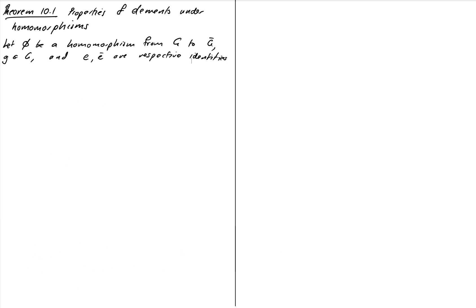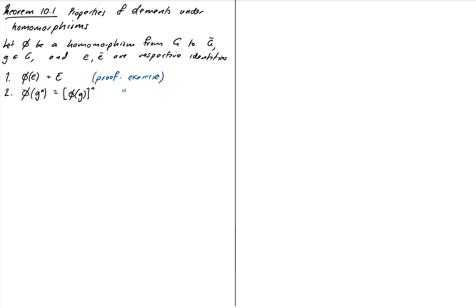Let phi be a homomorphism from G to G-bar, g an element of G, and let the groups G and G-bar have identities e and e-bar. Property one: phi takes the identity of G to the identity of G-bar. I'll leave the proof as an exercise — it works the same way as for isomorphisms. Property two: phi of g^n equals phi of g raised to the power of n, which follows directly from operation preservation.